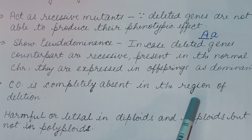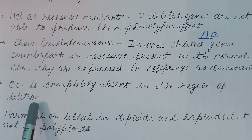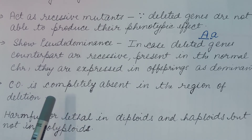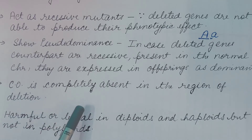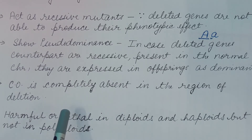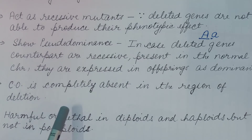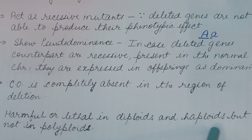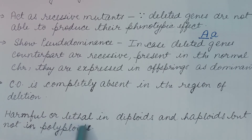Crossing over is completely absent in the region of deletion because the counterpart genes present in the normal chromosome are in a hemizygous state, and in this condition, crossing over is not possible. Deletions have harmful or lethal effects in diploids and haploids but not in polyploids, because in polyploids extra copies of the genes are present. In diploids and haploids, extra copies are not present, so deletion is harmful or lethal.